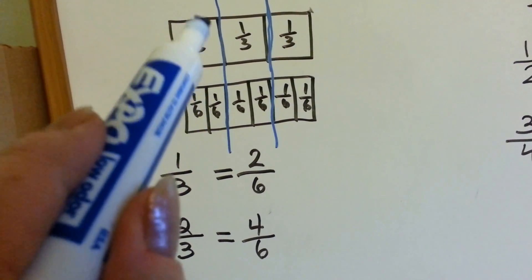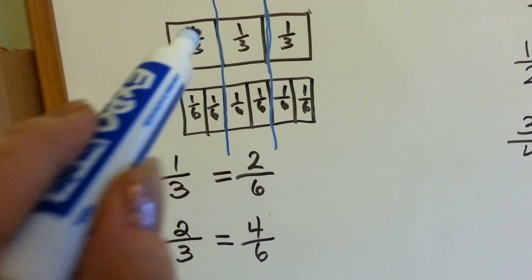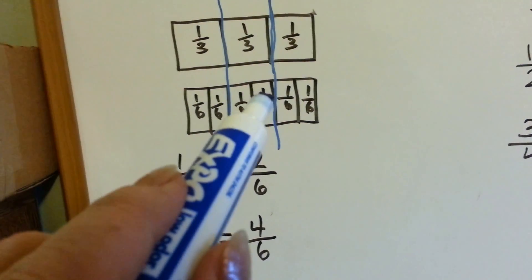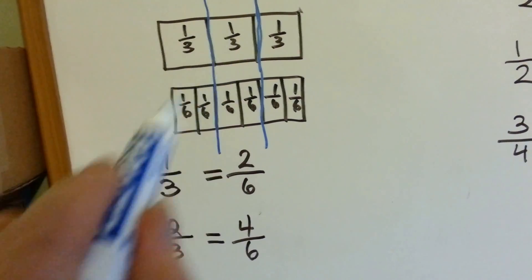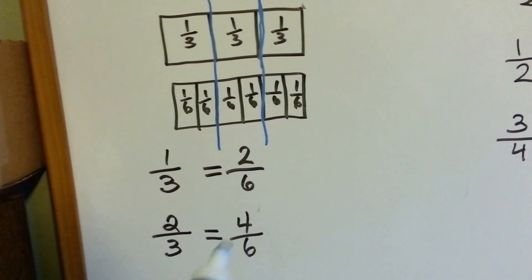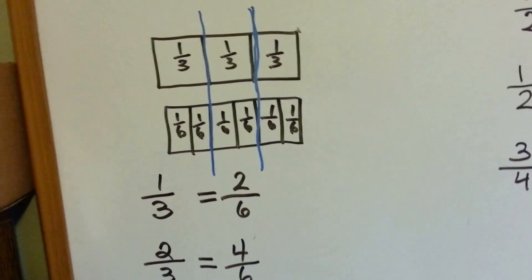Two thirds, these two are equal to four sixths. One, two, three, four, see? This amount here is the same as these down here, these four sixths. Two thirds is equivalent to four sixths.